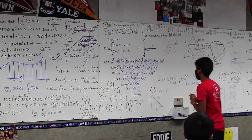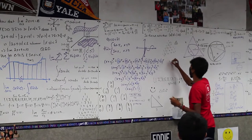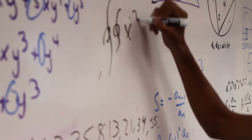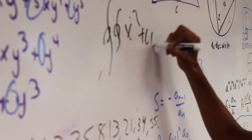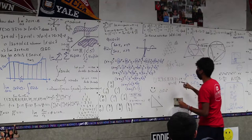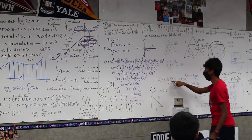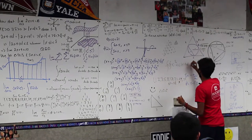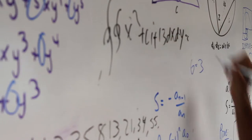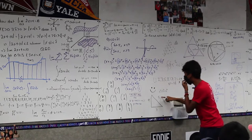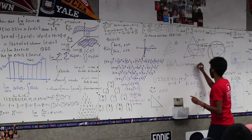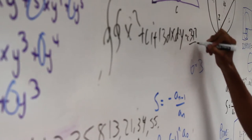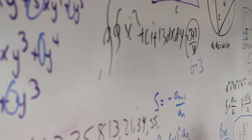OK, everyone, pay attention real quick. So we're going to take the double integral of x squared plus ci plus the 13th number of the Fibonacci sequence, and then throw in the dx dy. And if we use Pythagorean's theorem — watch — you get 3 pi over 4.